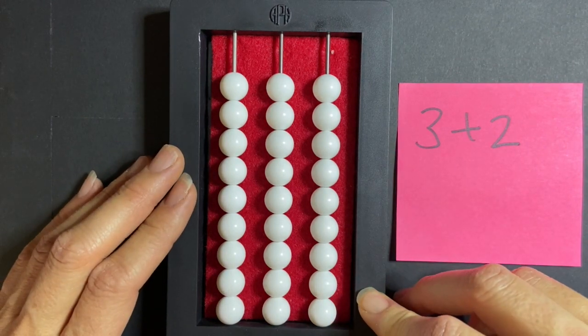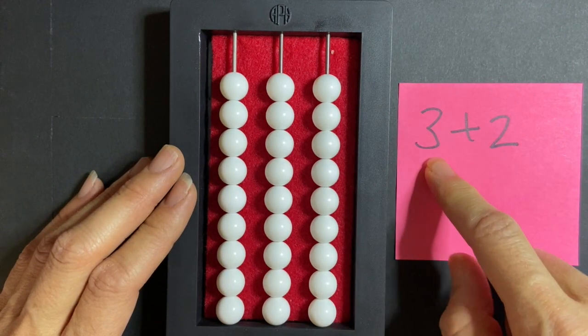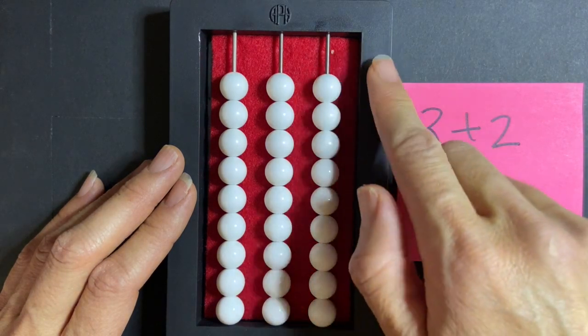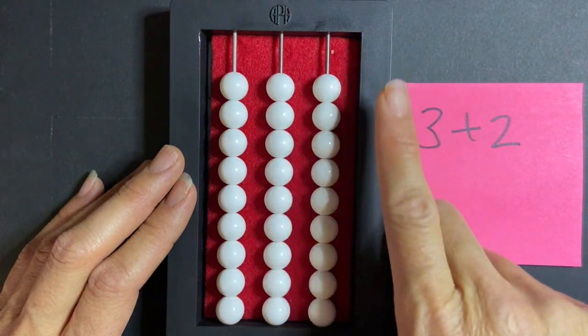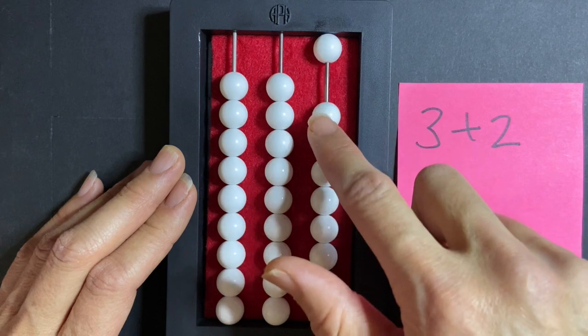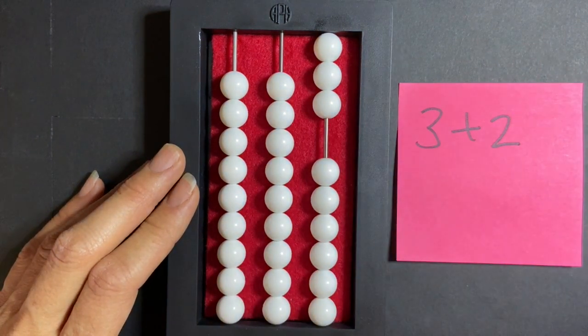I'm going to first start by setting 3, which is my first addend, on my abacus. I'm starting here in my ones column, which is on the far right-hand side: one, two, three. Now that I've set 3 on my abacus, I want to add 2 more.